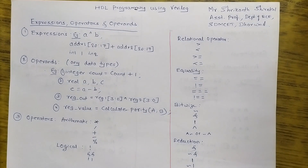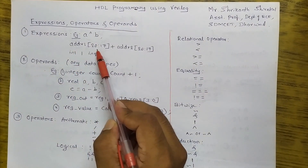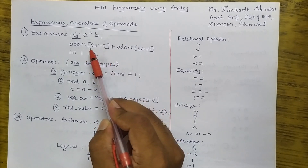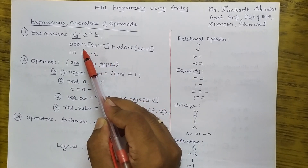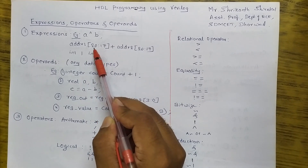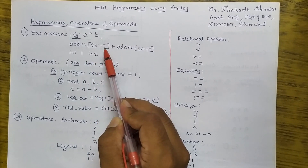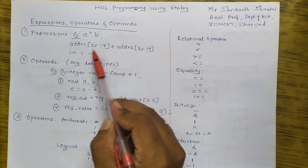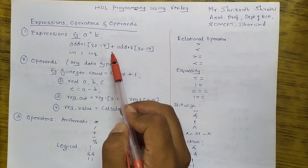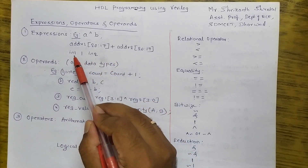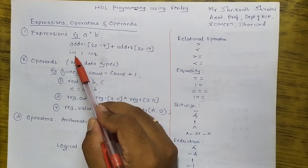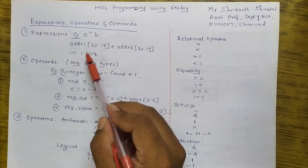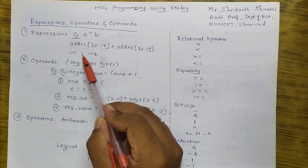We have certain examples here. Address 1, which is a vector part select — we are selecting a part of the vector from the 20th bit to the 17th, that is bits 20, 19, 18, and 17 — total 4 bits. So 4-bit plus 4-bit is an addition. The next expression example is i_in_1 OR with i_in_2, which is again an expression because we have operands as well as an operator.